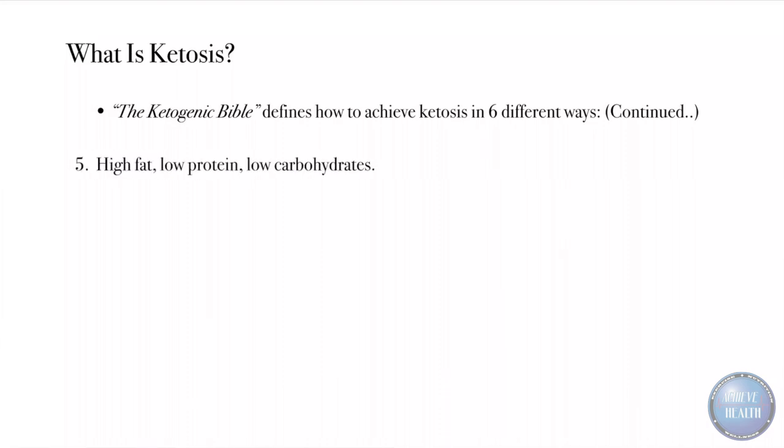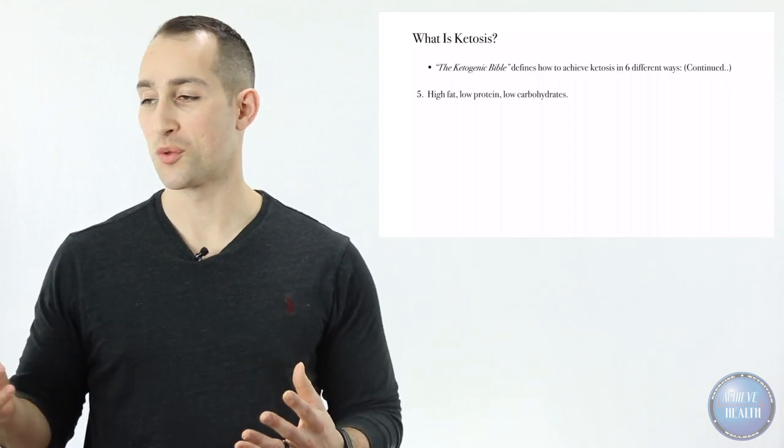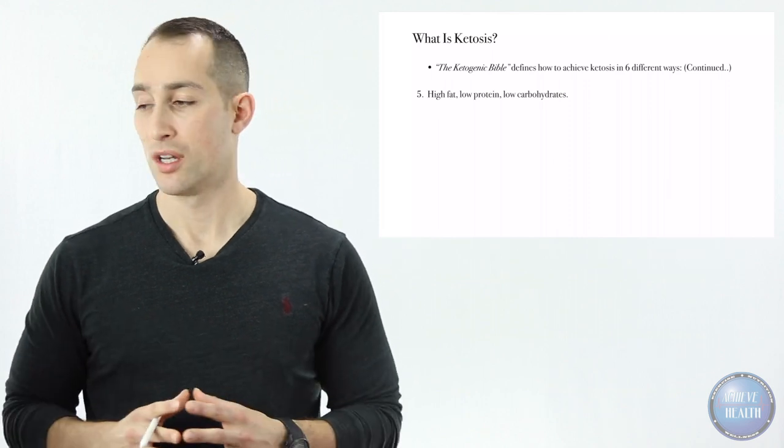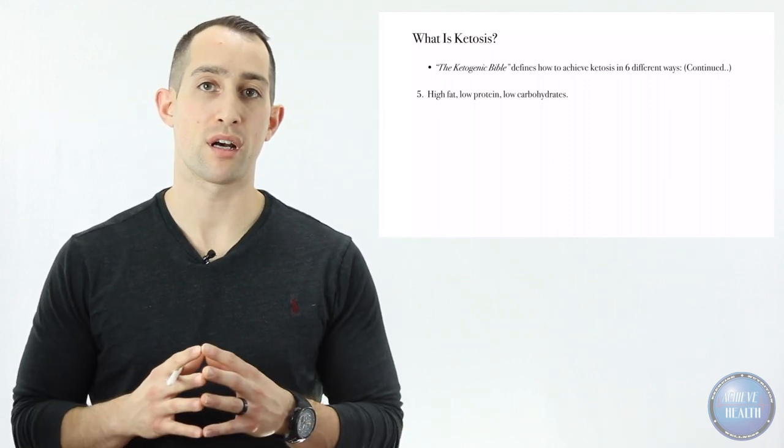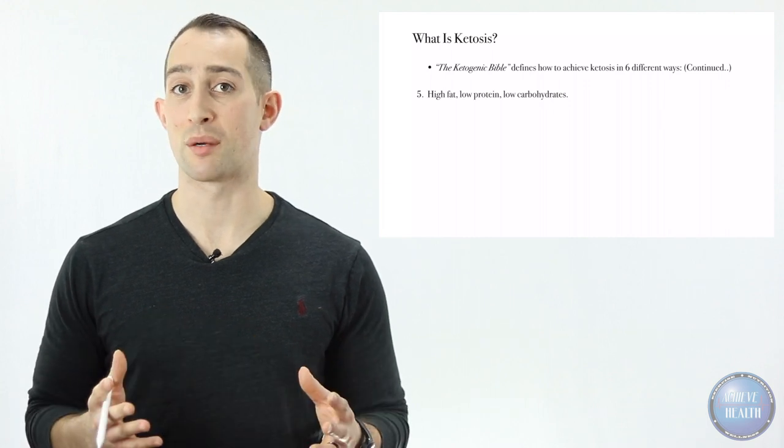Number five: high fat, low protein, low carbohydrate. This definition is just terrible because it doesn't give any amounts, percentages, or gram amounts. This is a problem because it really doesn't pertain to anybody. It's too general and it's not deliberate in its approach.